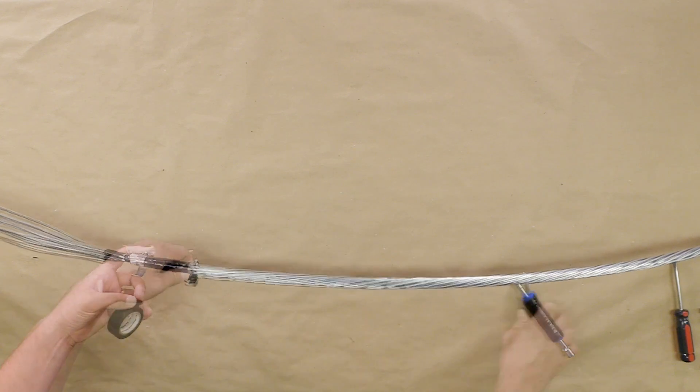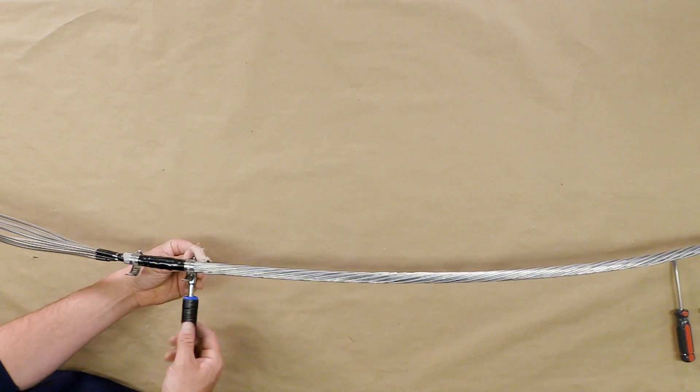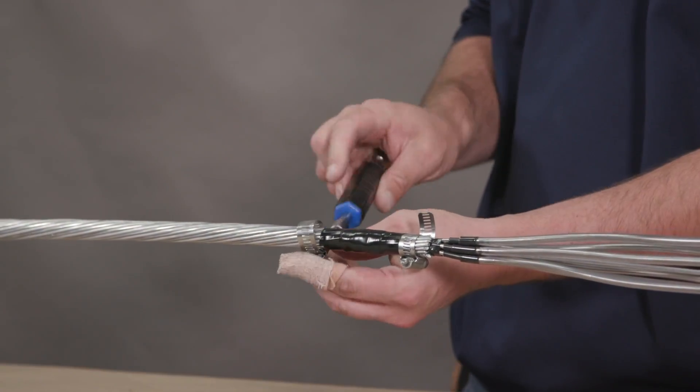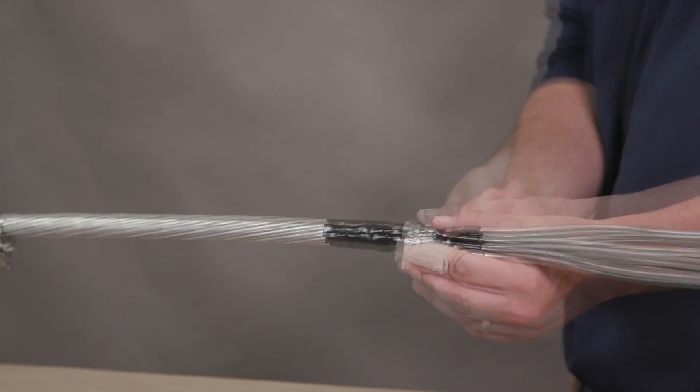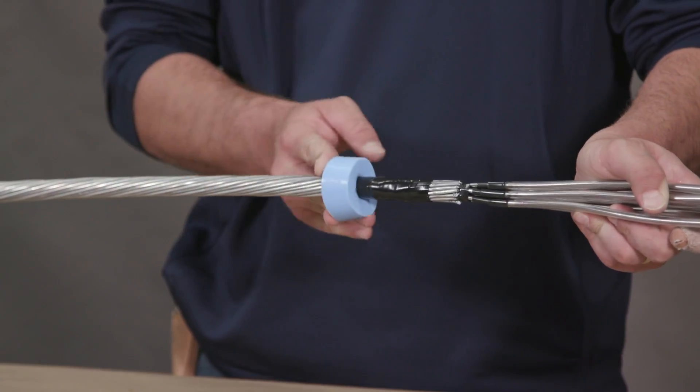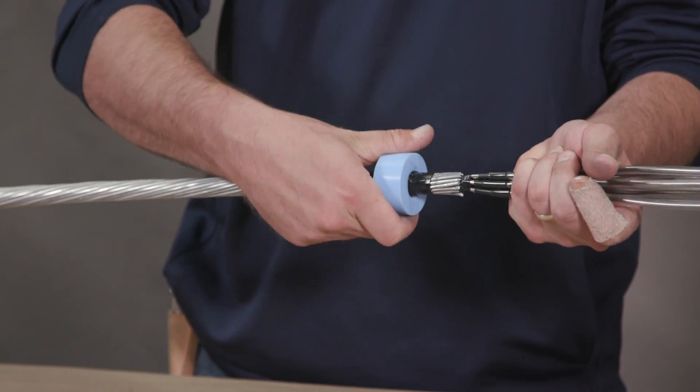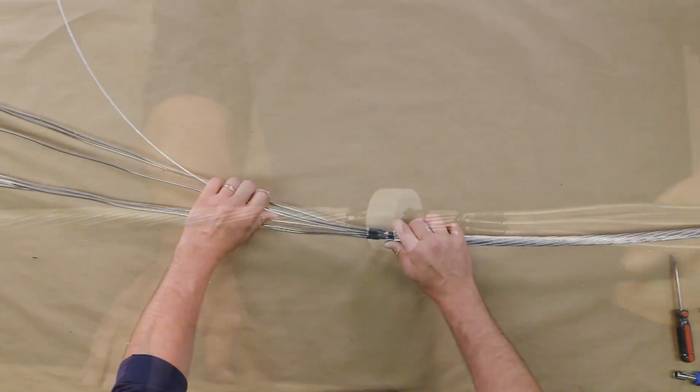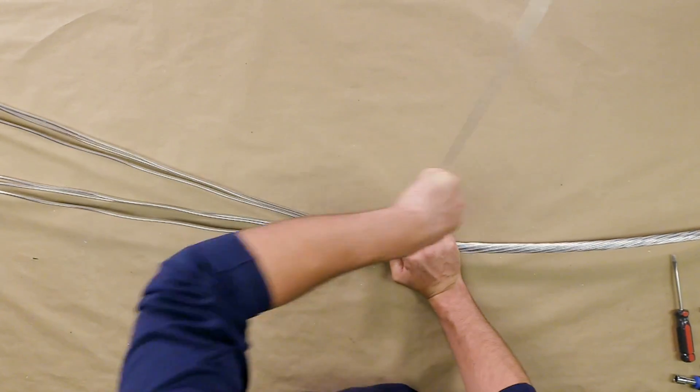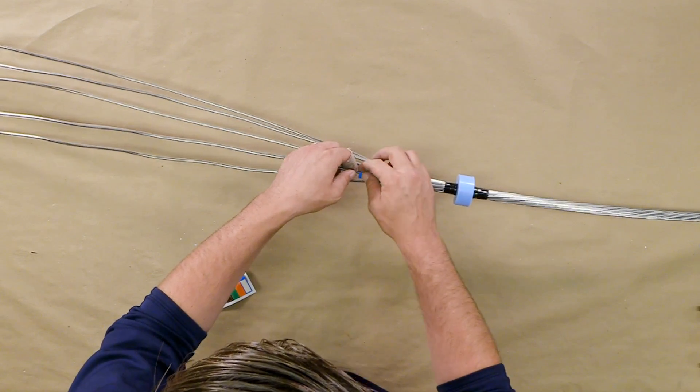Remove hose clamps and slide grommet over the center of the sealant. Break central strength member at scored location. Use provided colored stickers to mark each buffer tube appropriately.